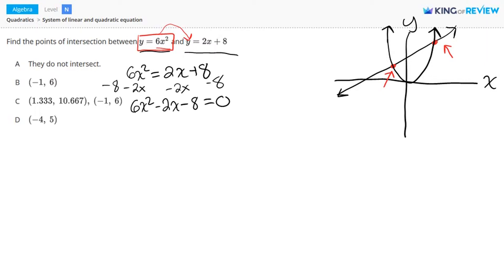Now this equation can be factored. The left hand side can be factored. Well, we can first factor out a 2 from each of these three terms. So let's do that. When we factor out a 2, we get 2 times 3x squared minus x minus 4. And this equals zero.